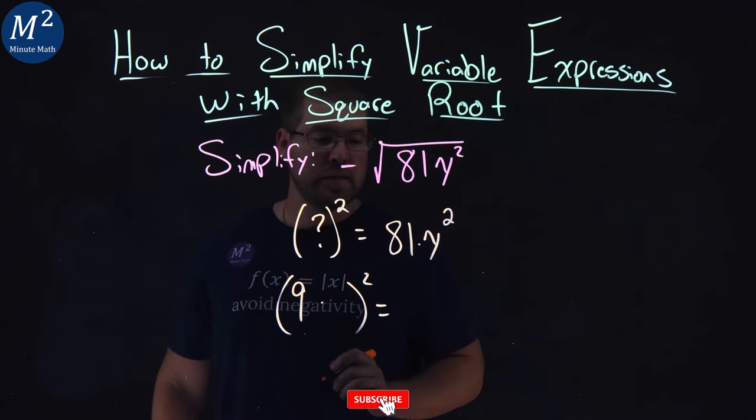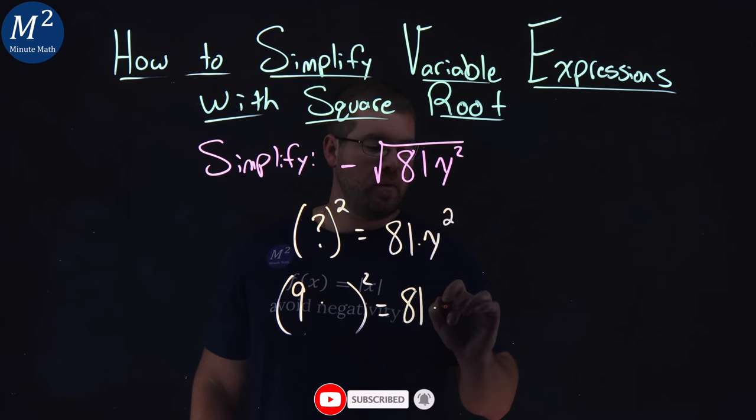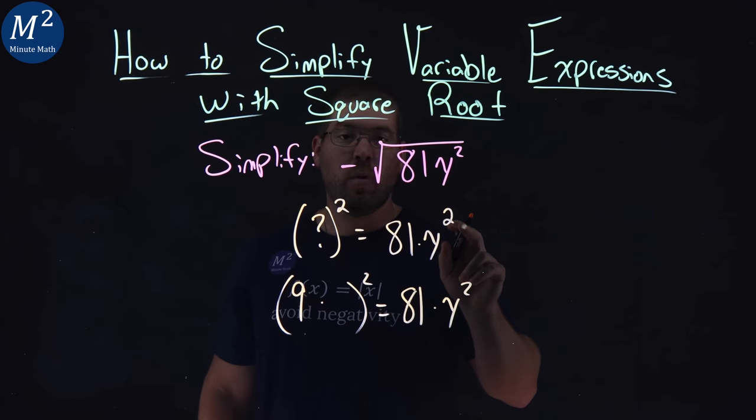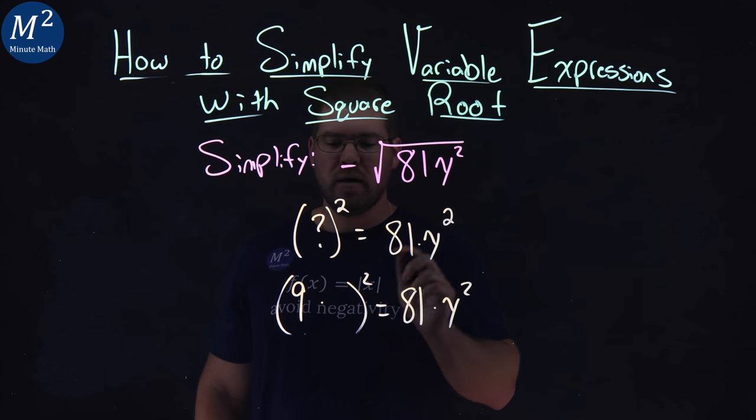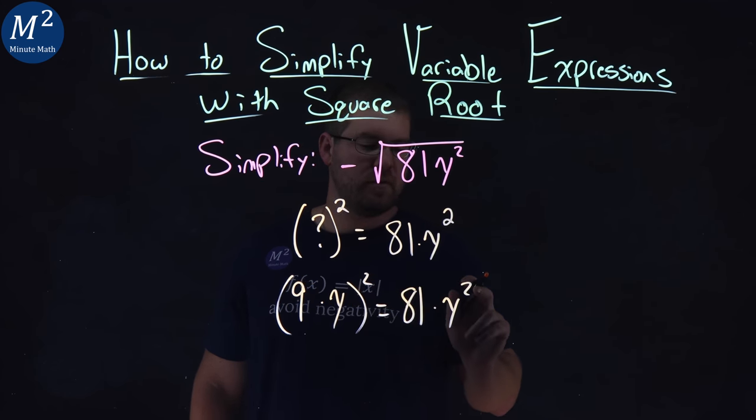So we have a 9 here, times—now we're dealing with the y squared. What gives us y squared? And that's just going to be a y, right? y squared on the outside gives us the y squared here.